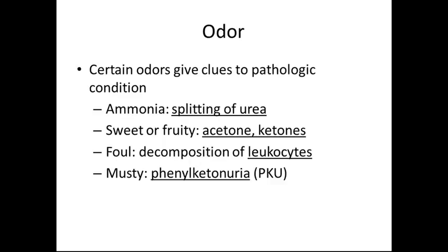Certain odors give clues to pathological conditions. Ammonia, also called splitting of urea, can indicate urinary tract infection or liver damage, and can also result from diets high in protein or dehydration. A fruity or sweet smell, such as acetones and ketones, is typically seen in diabetic patients. A bile smell is the decomposition of leukocytes, common in urinary tract infection, and also caused by foods such as asparagus. A musty smell is usually an indicator of PKU, or phenylketonuria.